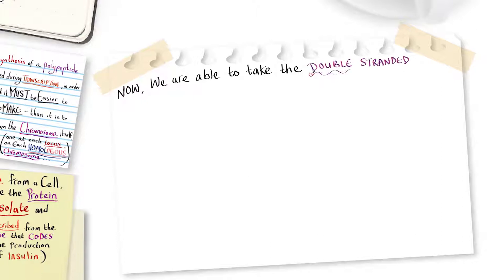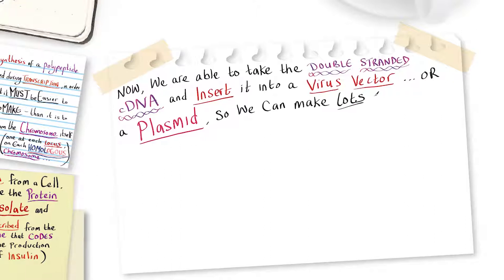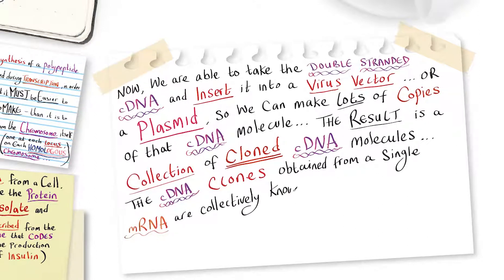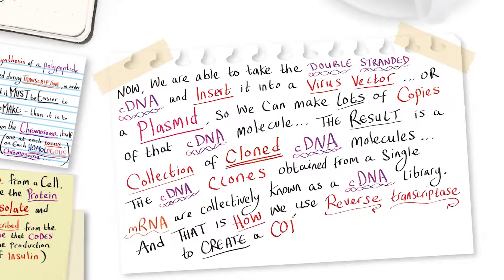Now we are able to take the double-stranded complementary DNA and insert it into a virus vector or a plasmid so we can make lots of copies of that cDNA molecule. The result is a collection of cloned cDNA molecules. The cDNA clones obtained from a single messenger RNA are collectively known as a complementary DNA library. And that is how we use reverse transcriptase to create a copy of DNA for the gene we are interested in from a messenger RNA molecule.